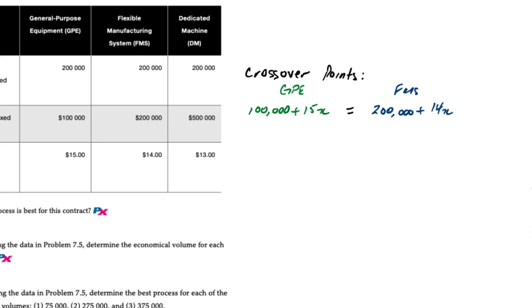For the first one we'll take GPE and set that equation equal to the FMS system. So for GPE we have 100,000 plus 15x where x is the number of units, and we set that equal to the FMS cost equation of 200,000 plus 14x. Using basic algebra we'll take 15x minus 14x and set that equal to $200,000 minus $100,000, and x is therefore 100,000.